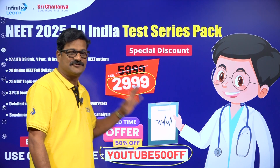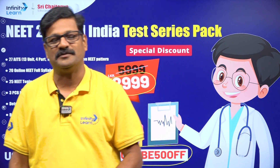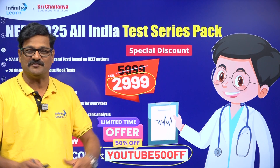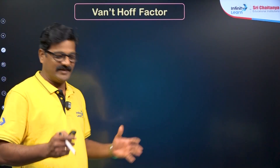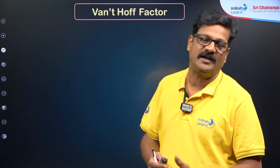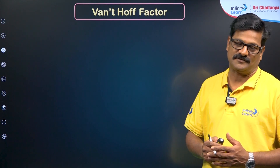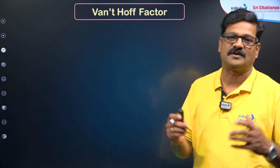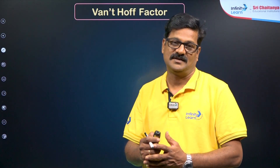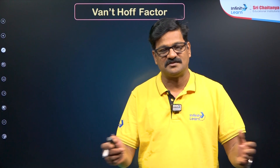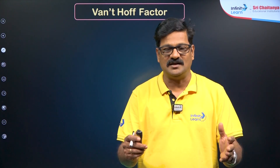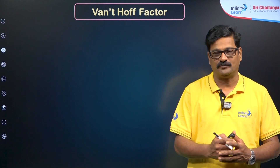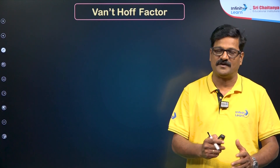In the description box, the link is available — just click it and enjoy seamless preparation for the NEET examination. All the best. Getting into the topic of the day: the Van't Hoff factor. Whatever colligative properties we calculate, it is for the sake of calculating molecular masses. Because of association or dissociation, the colligative properties you are going to get are abnormal. To correct this, the Van't Hoff factor is introduced.